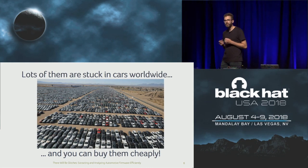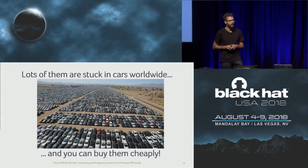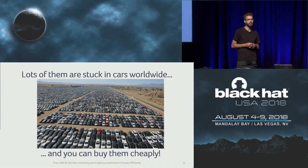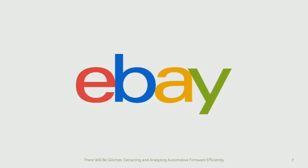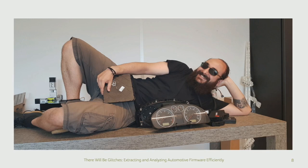All these ECUs are stuck in cars everywhere in the world. These are all the cars that were returned after the dieselgate scandal — they're full of ECUs and these cars are not being used. The same holds for cars that crash: some parts might be broken, but most of the ECUs are still intact. This means you can typically buy them very cheaply on sources like eBay, and you end up with lots of ECUs in your lab.